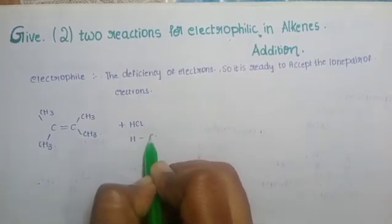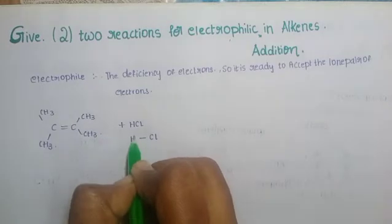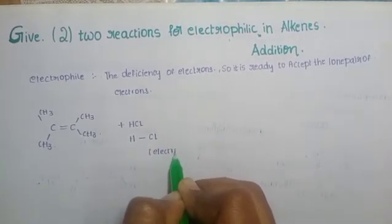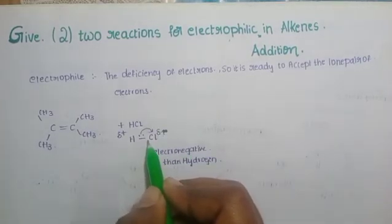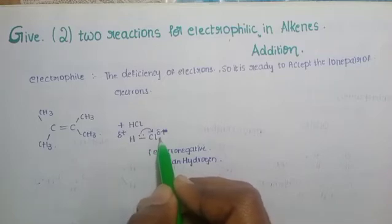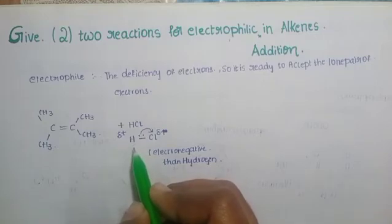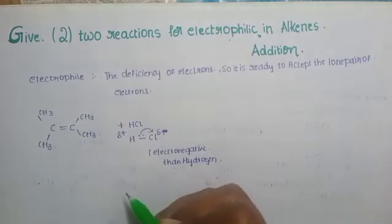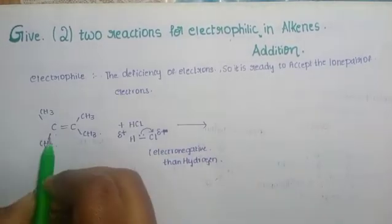So we have HCl — a bond between hydrogen and chlorine. Chlorine is more electronegative than hydrogen, so chlorine accepts lone pair electrons and becomes the negative species, while hydrogen loses electrons and becomes the positive electrophile — that is, the electron-deficient hydrogen. Now we can enter into the mechanism.